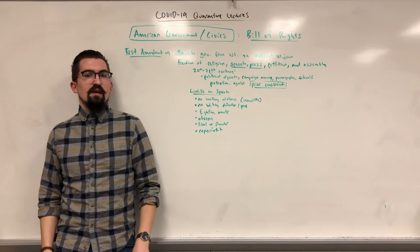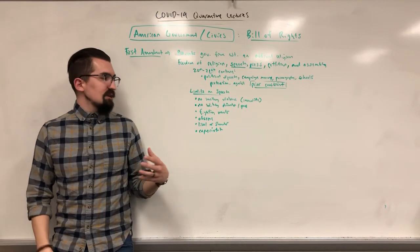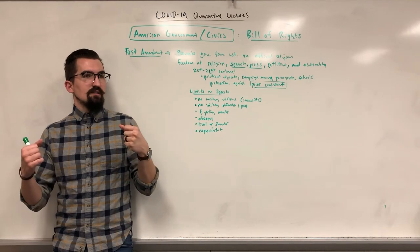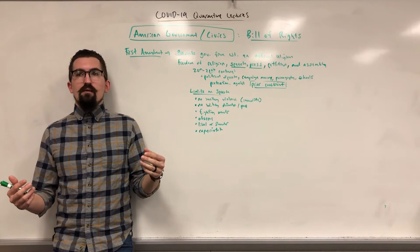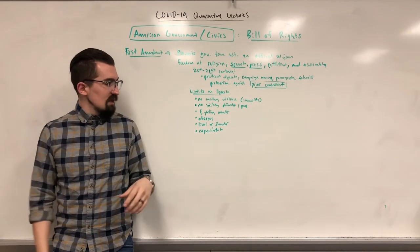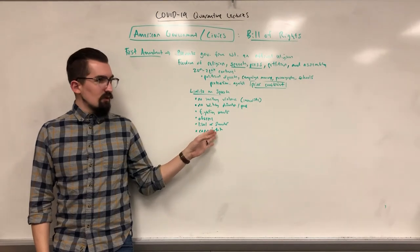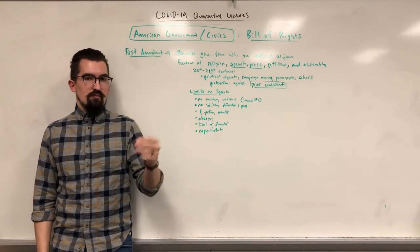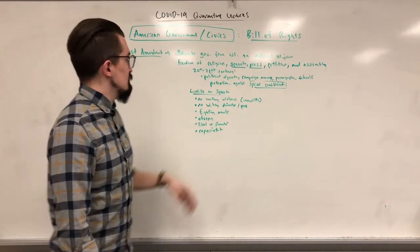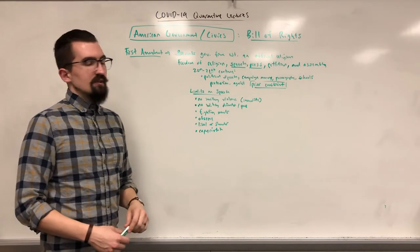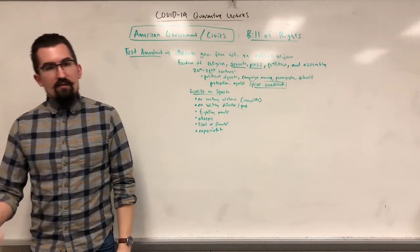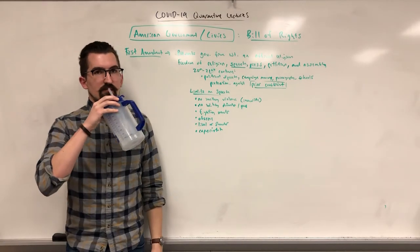So the First Amendment is much more complex than you might think. Basically: you can't intentionally lie, you can't incite violence or disorder, you can't violate community norms around obscenity, and you can't lie or use other people's intellectual property to damage their reputation. Those are the basic limits, which gives you a good idea of what you can and can't do. That's the longest amendment we'll talk about, so let's move on to Amendment Two.